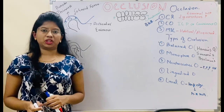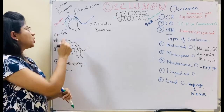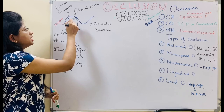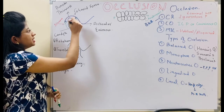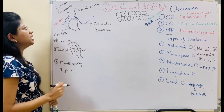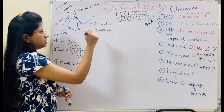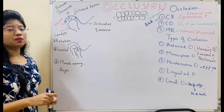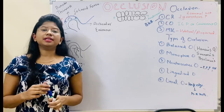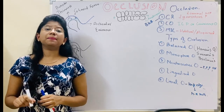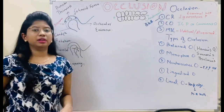Now we will move on to the definition. Centric relation is the maxillomandibular relation in which the condyle articulates with the thinnest avascular portion of the articular disc, with the complex in the anterior and superior position against the slope of the articular eminence. This position is independent of tooth contact — it is a bone-to-bone relation, not a tooth-to-tooth relation.